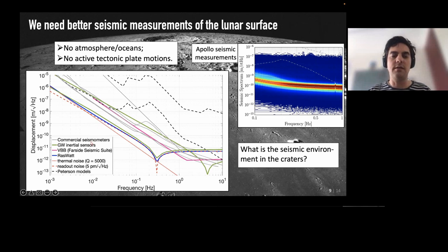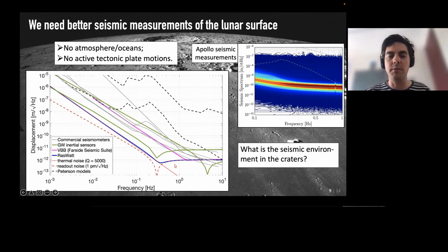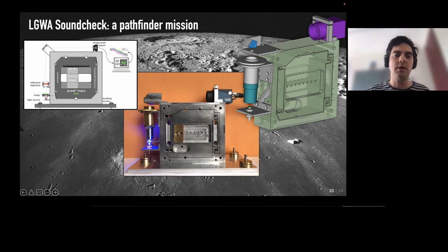So here you can see that we are developing this Rasnik sensor that will be much better than the commercial sensors that are available, and hopefully also better than the VBB, which is part of the Farsight Seismic Suite, which will be deployed in two or three years. So this is with the technology that will reach five picometer per root Hertz. And in the future, we hope to reach one picometer per root Hertz. And this readout is the Rasnik that I showed you before. So the Rasnik also measures the proof mass motion by projecting a backlit mask via some objective onto a pixel sensor. And then the motion of this image of this mask can be extracted.